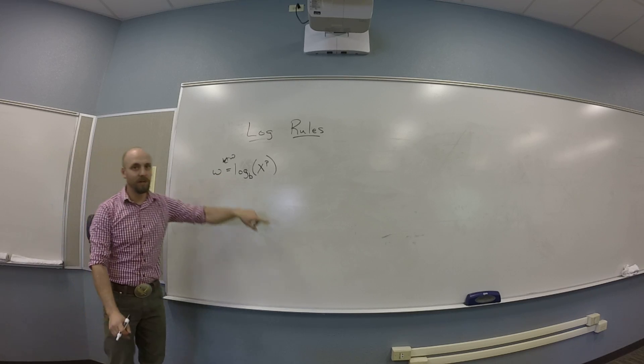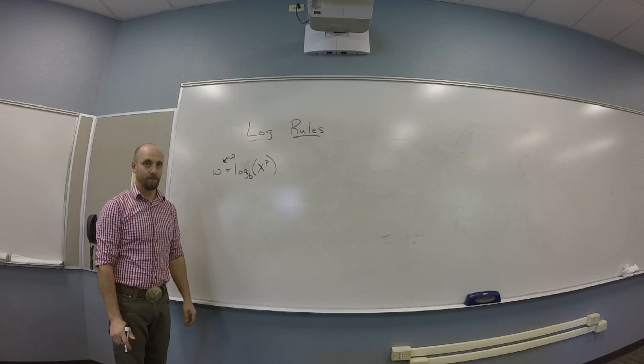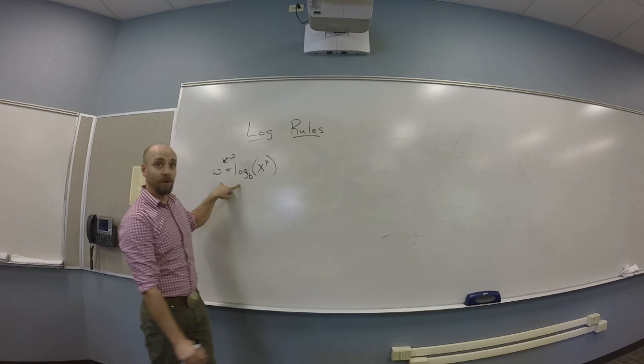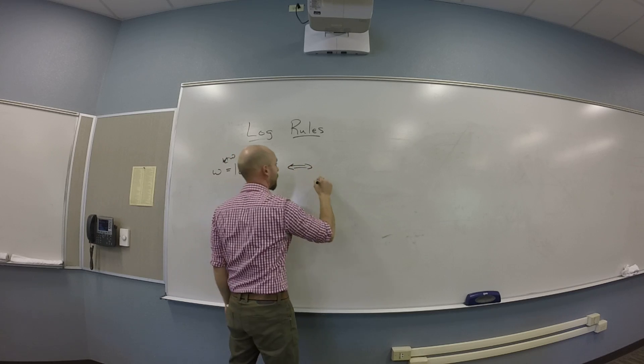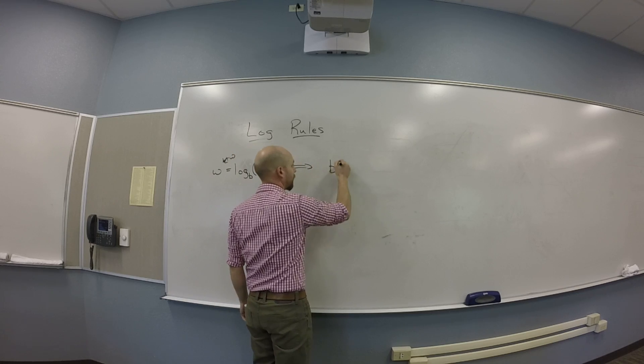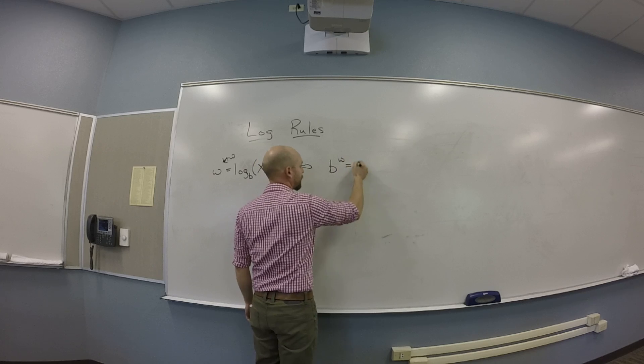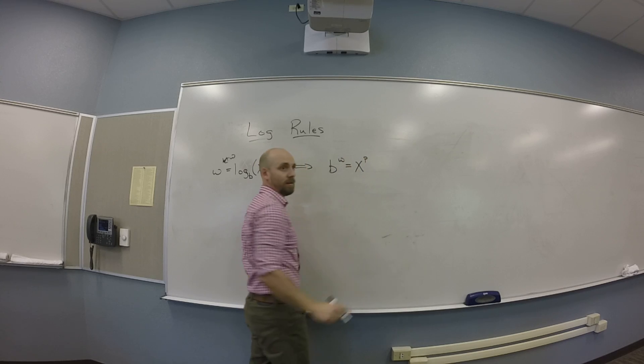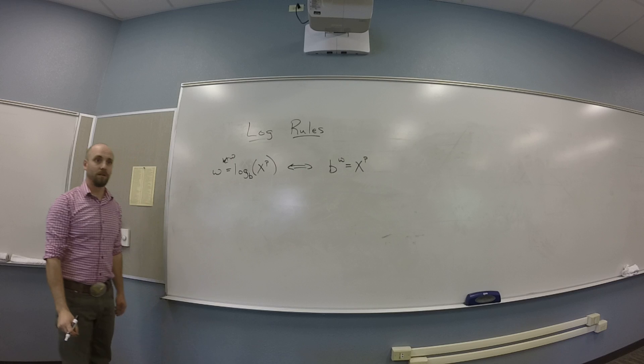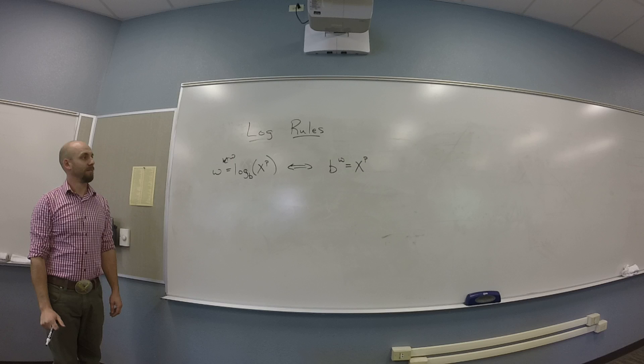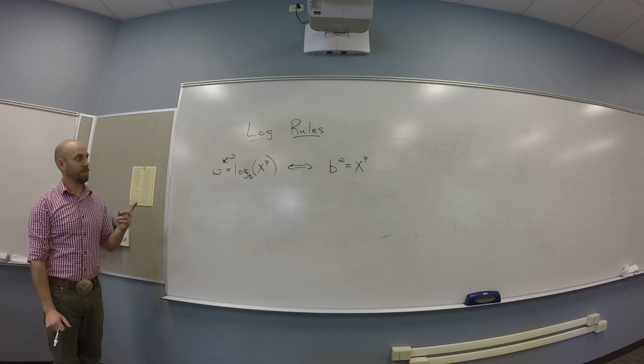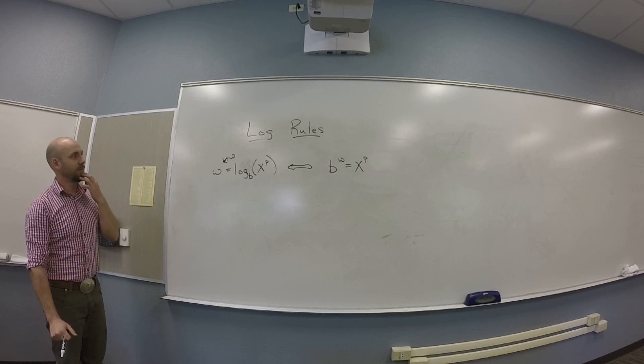What does this mean in exponential form? This is in logarithmic form, right? It means that b, so in exponential form, b to the power of w is x to the p. b to the w is x to the p, right? You guys looking at that?